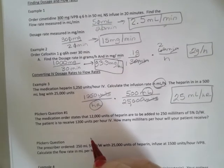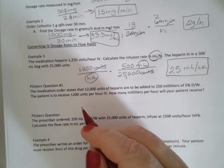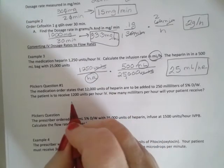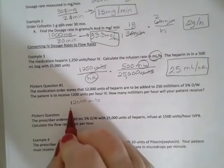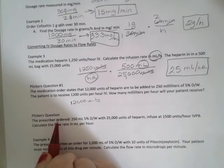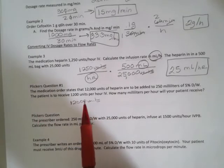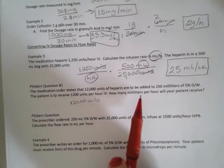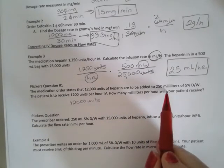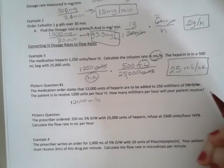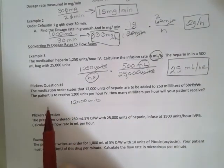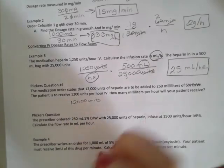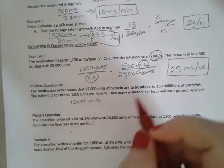My next question is another heparin question. So we're ordered at 12,000 units. The medication order states that 12,000 units of heparin are to be added to 250 mLs of 5% D5W. We don't care about the 5% D5W right now. That's just going to tell you which solution that it's in. The patient is to receive 1,200 units per hour. So our IV of 250 mLs has 12,000 units in it.